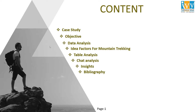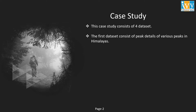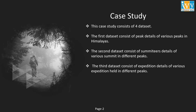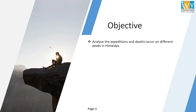These are the topics we are going to discuss in this case study. The case study consists of four datasets: the first dataset contains peak details of various peaks in the Himalayas; the second contains summit details of various summits on different peaks; the third contains expedition details of various expeditions on different peaks; and the last dataset contains death details of various deaths occurring on different peaks. Our main objective is to analyze expeditions and deaths occurring on different peaks in the Himalayas, publishing insights based on data analysis using MySQL Workbench.